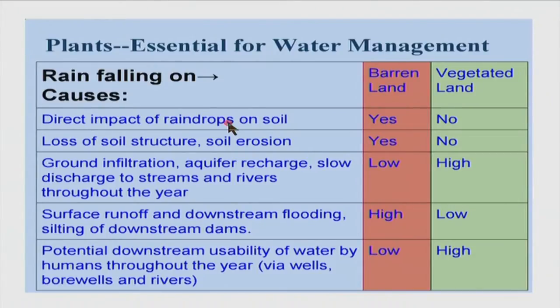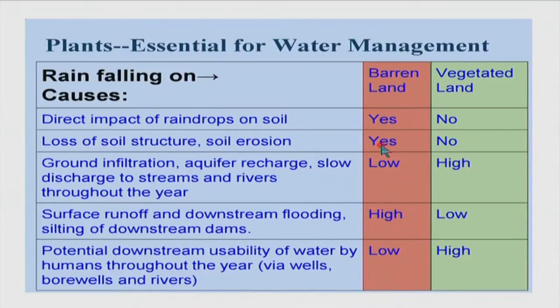If the soil is vegetated, erosion is reduced and the soil becomes quite productive. I have summarized all these points in a table comparing barren land versus vegetated land. On barren land, you have direct impact of raindrops on soil, loss of soil structure, and erosion. On vegetated land, you do not have these problems. This is just for easy reference.